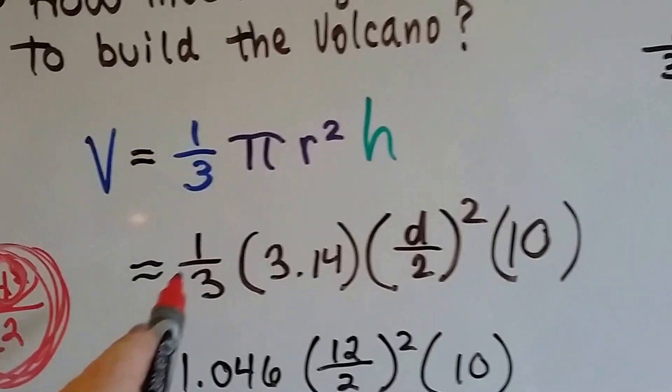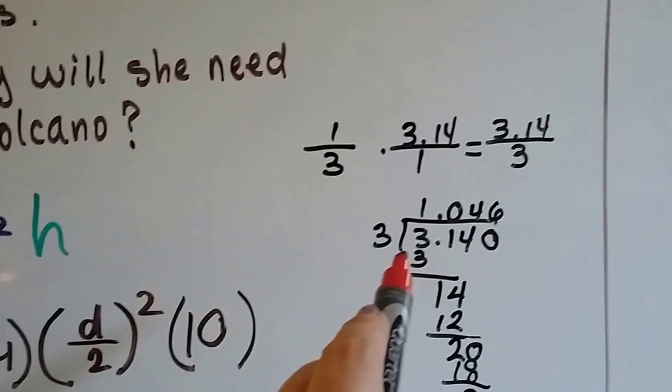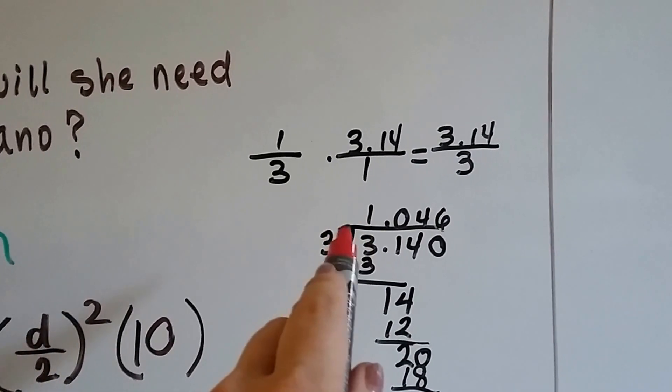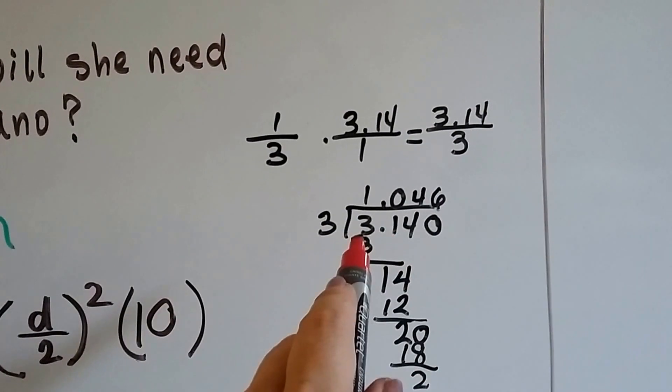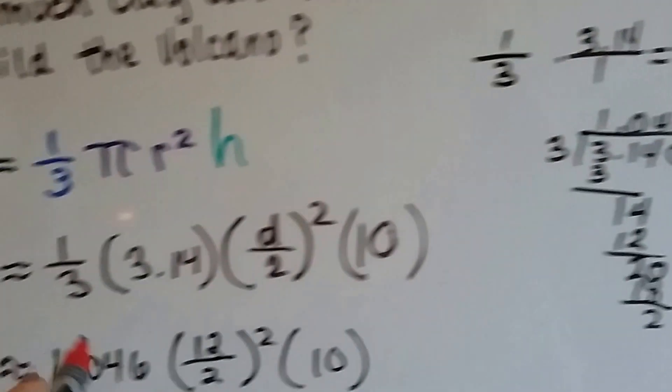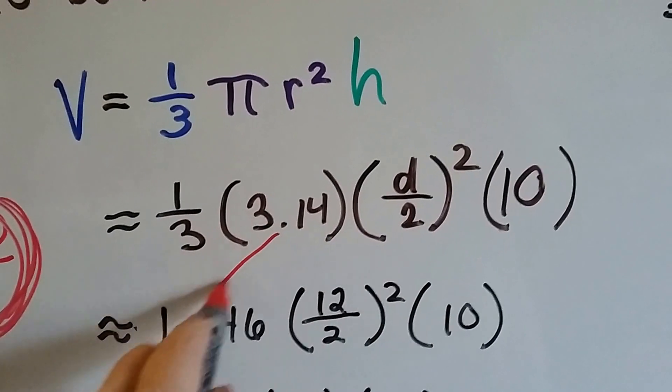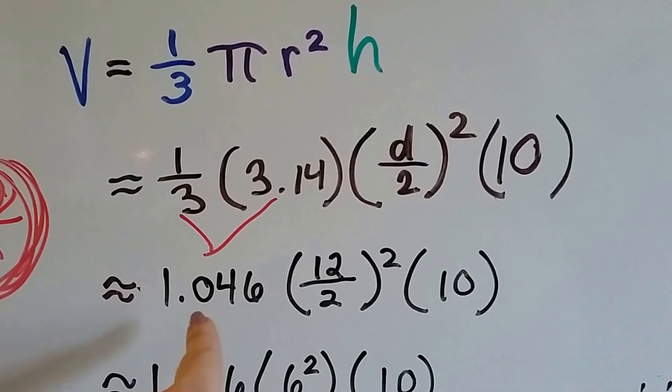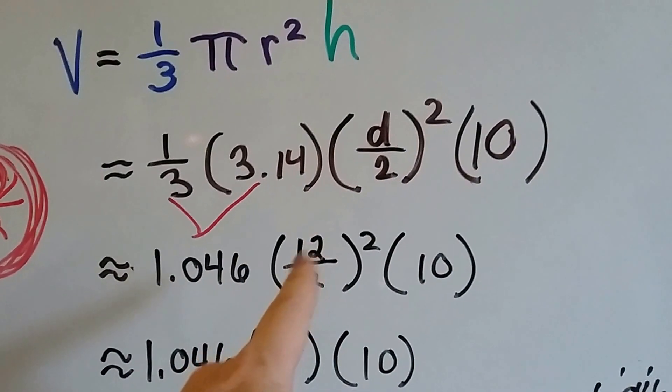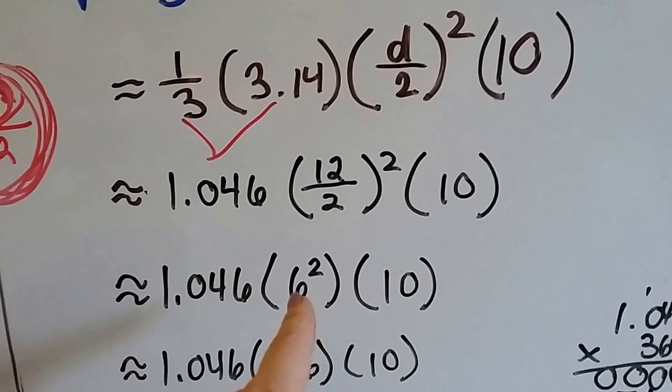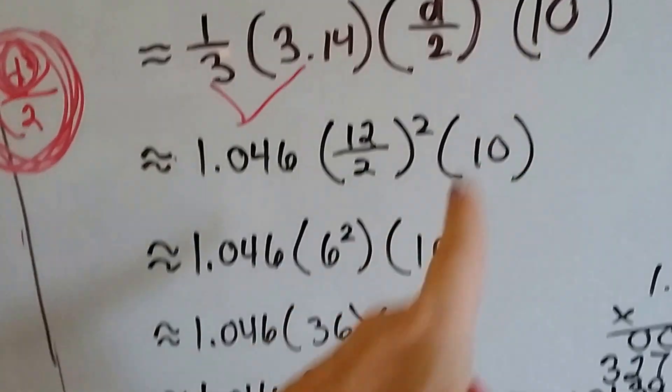So one-third times 3.14 comes out to 3.14 over 3. We divide that, and we get 1.046. So now these two bring us to the 1.046. The diameter is 12, and 12 divided by 2 is 6. We need to square that, and we drop the 10 down.